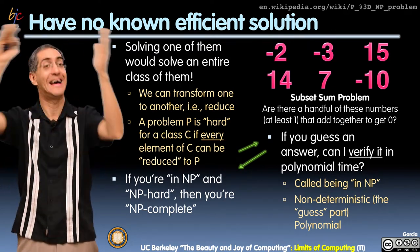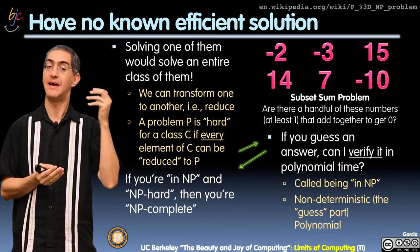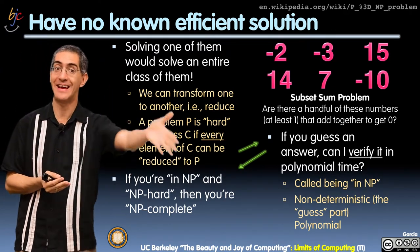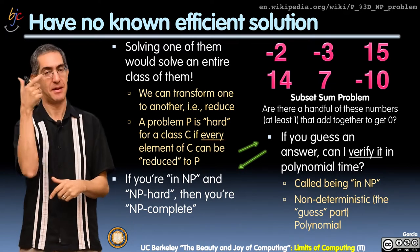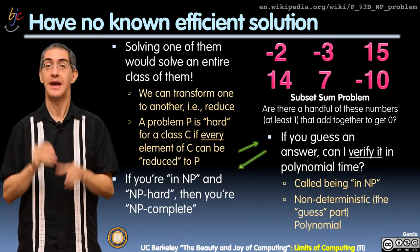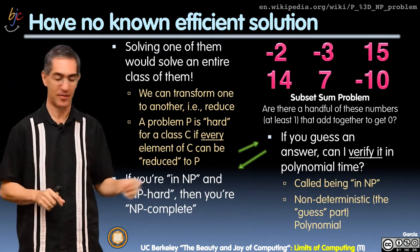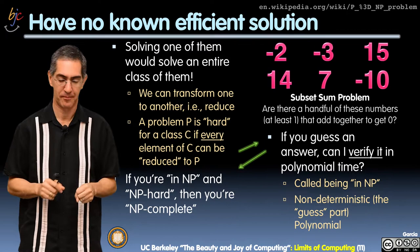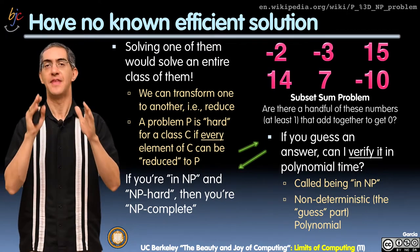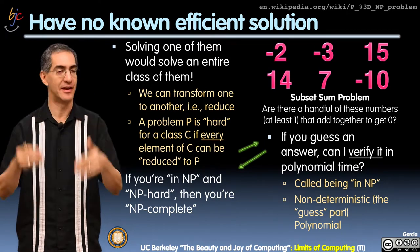NP is like a class of things that might be really hard to find, but you can guarantee verification. Here's another example on this slide — a very simple one.